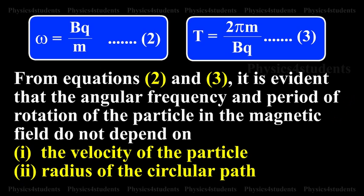From equations 2 and 3, it is evident that the angular frequency and period of rotation of the particle in the magnetic field do not depend upon the velocity of the particle and radius of the circular path.